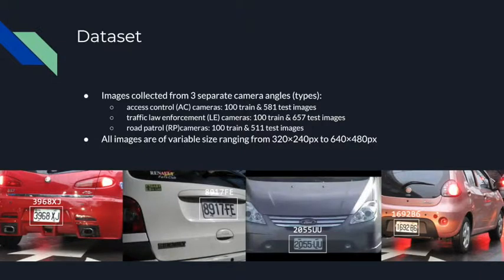The dataset used to train our system included images from three different camera types, which we call AC, LE, and RP — access control cameras, traffic law enforcement, and road patrol cameras. Each had approximately 100 training images and 500 to 600 test images, with variable sizes ranging from 320x240 pixels to 640x480 pixels.